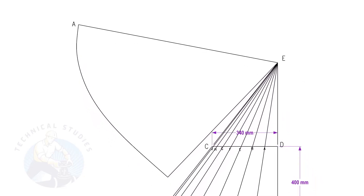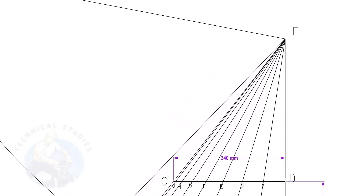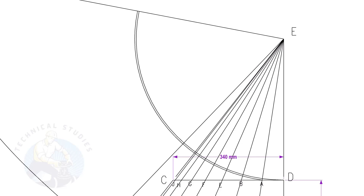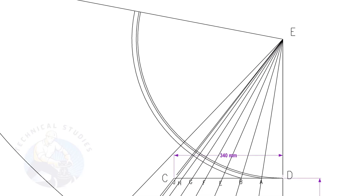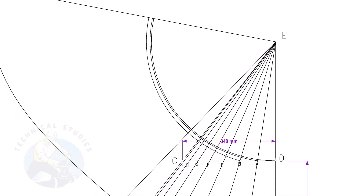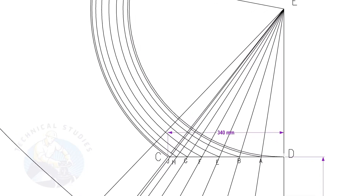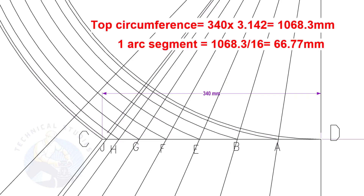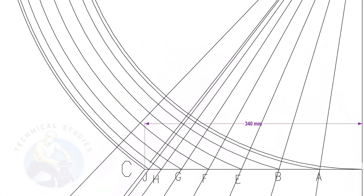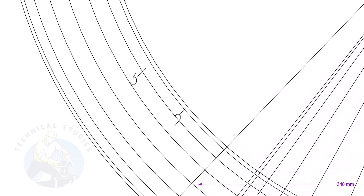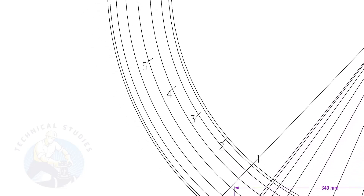Let us draw the top portion of the cone. The procedure is similar to that of the bottom side. Draw arcs ED, EA, EB, etc. Calculate the circumference of the top side and divide it by 16. The top side diameter is 340 mm. The length of one arc segment is 66.77 mm. Draw arcs as done previously.